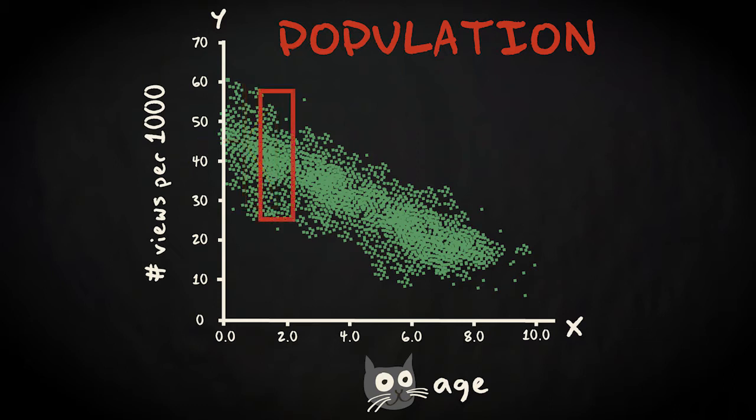We could do the same for one-and-a-half-year-old cats, and 2.74-year-old cats, 5.38-year-old cats, and so on. For each possible cat age, we will find a distribution of varying popularity scores. For example, for the one-and-a-half-year-old cats with a mean of 43.75, and for the 2.74-year-old cats with a mean of 40.65, and so on.